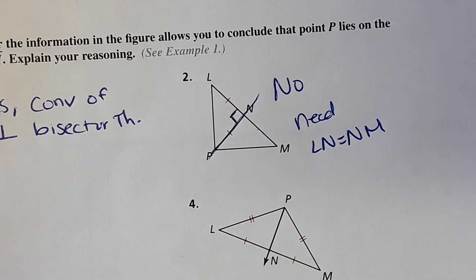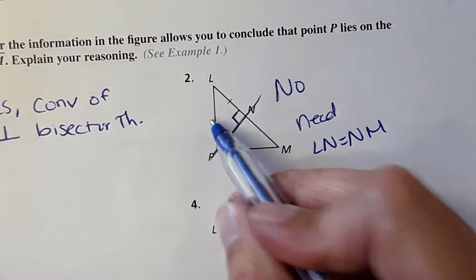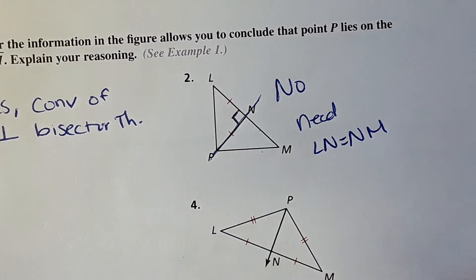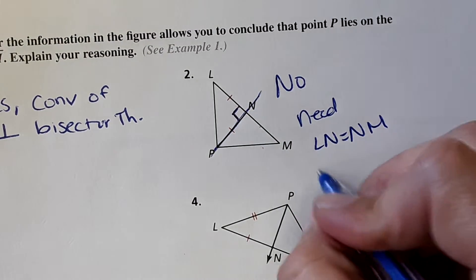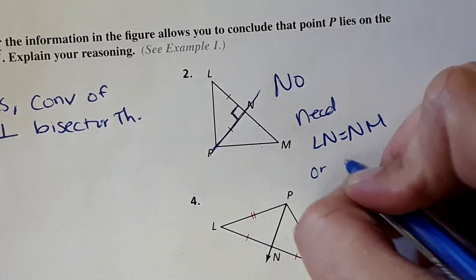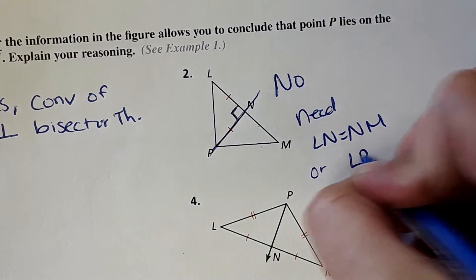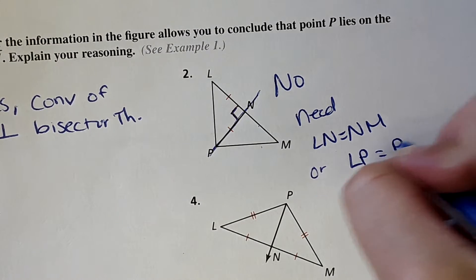We'd need that LN is equal to NM to say that this was a perpendicular bisector. Or we'd have to know that this is equal to this — or LP equal to PM.